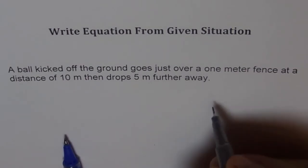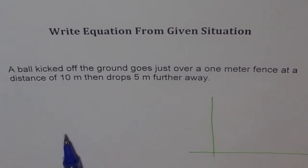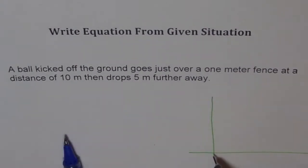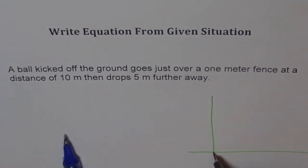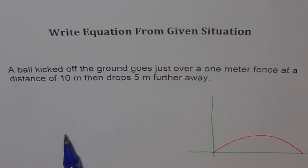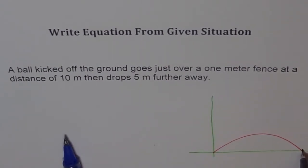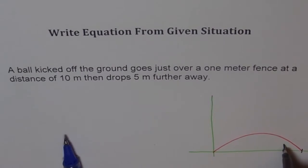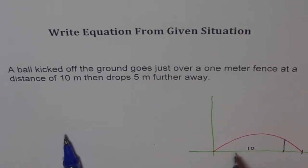A ball is kicked off the ground. So now let me make a kind of figure to see what we are trying to do. The ball is kicked off the ground initially, over a 1 meter fence at a distance of 10 meters and drops. If a ball is kicked, it will go something like this. Now, if a ball is kicked off the ground, goes over a 1 meter fence at a distance of 10 meters and then drops 5 meters. That means from here we have a fence, and this fence is 10 meters from this point. Does it make sense? So this is like 10 meters from, let's say 0, 0.